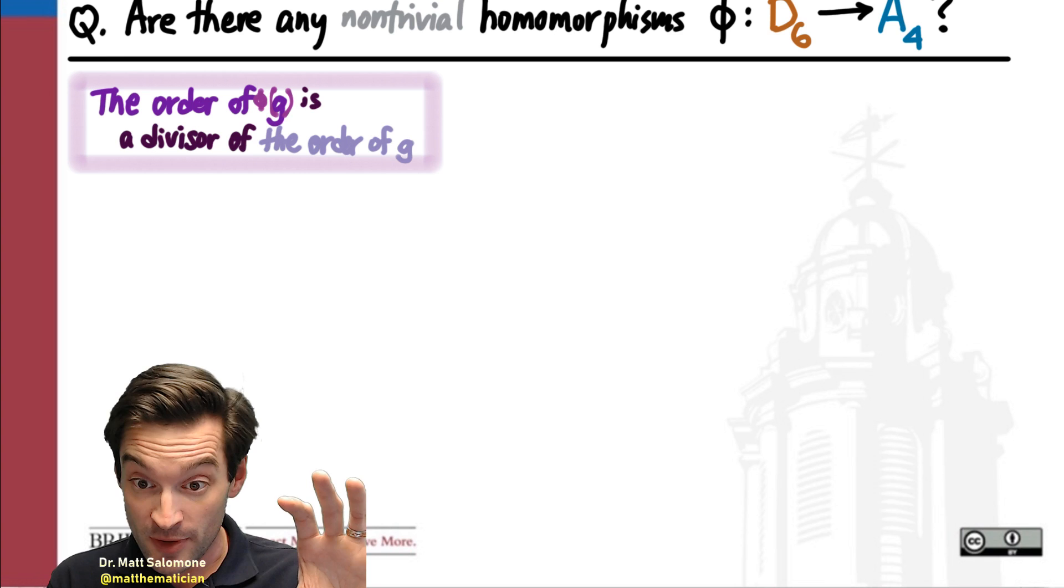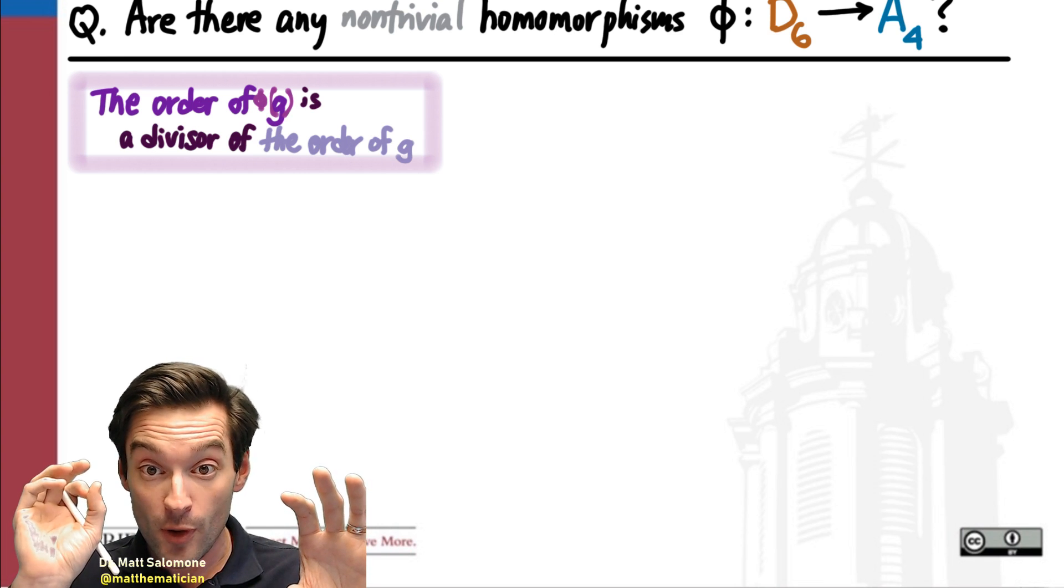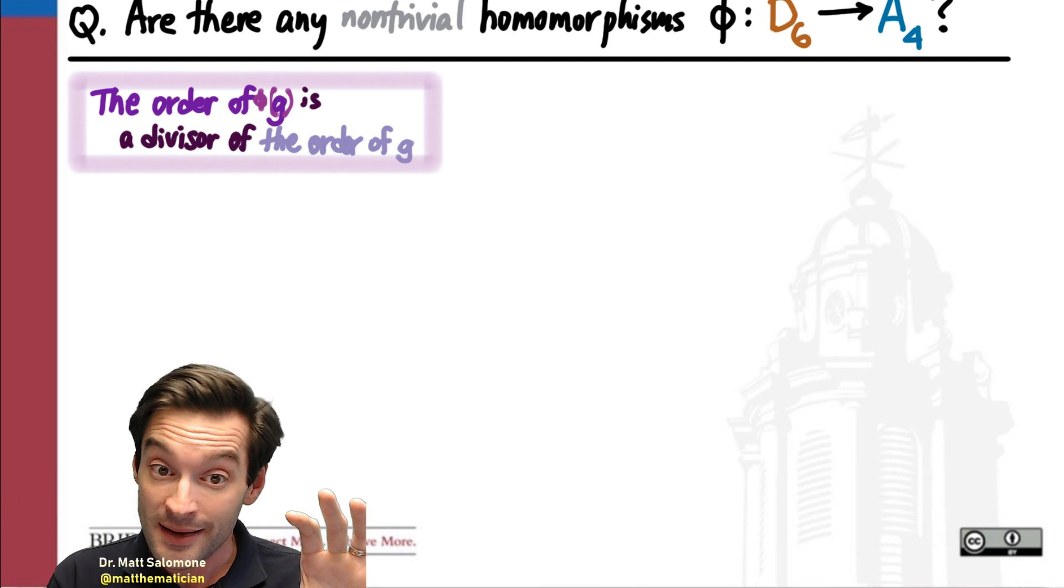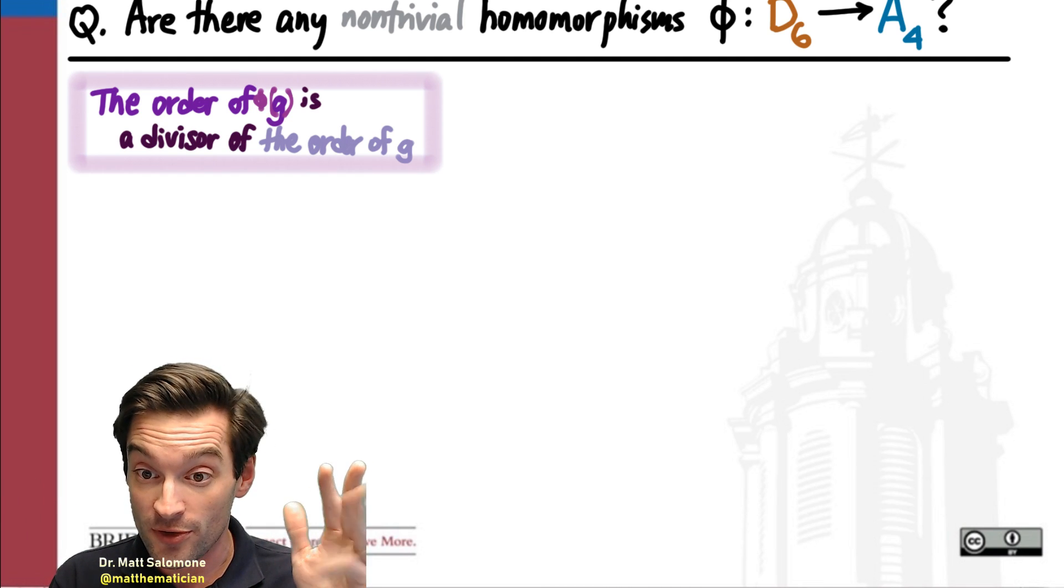we know how homomorphisms behave with respect to the orders of elements. The order of the image of an element is always a divisor of the order of the original element. So if my original element has order 12, its image under a homomorphism can have order 1, 2, 3, 4, 6, or 12,